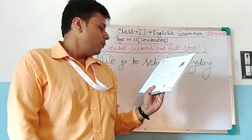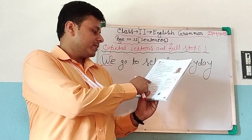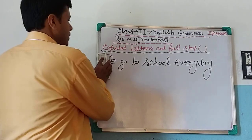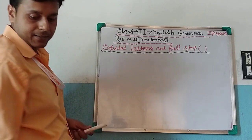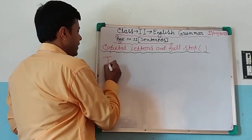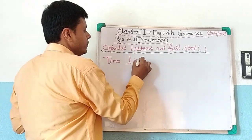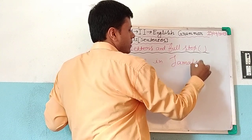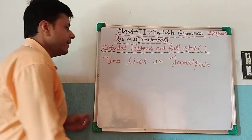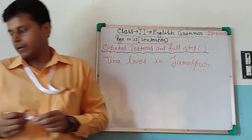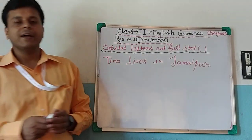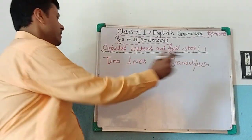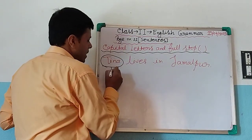Second rule: capital letters are used for special names of people, pets, places, rivers, and mountains. For example, the special name of people. I am writing another sentence: Tina lives in Jamalpur. Now what is the special name here? Special name means particular name. In the previous class we read that a particular name is a special name. Here, Tina is the special name for a girl.